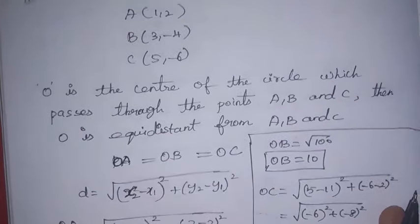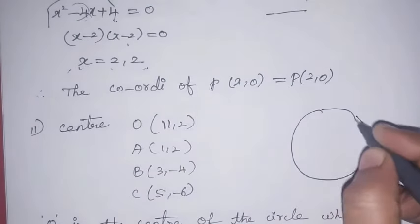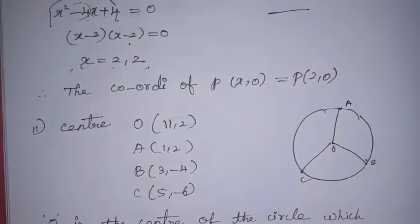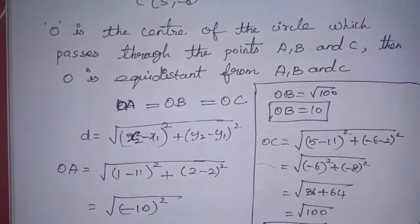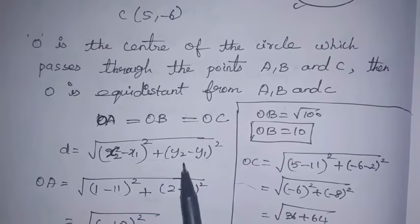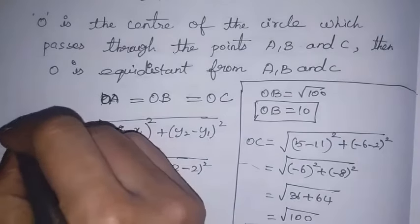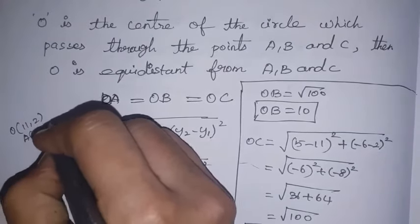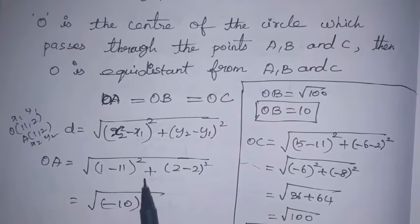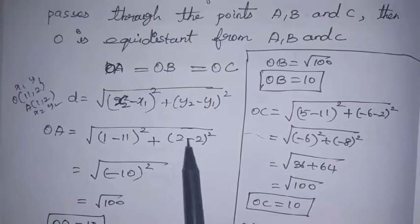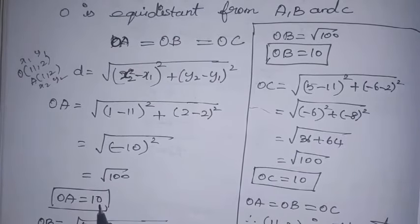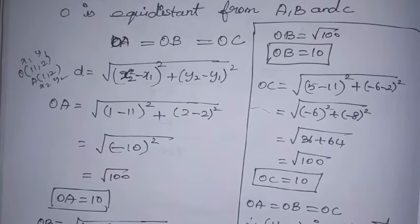First, find OA. O is (11, 2) as (x1, y1) and A is (1, 2) as (x2, y2). OA = √[(1 − 11)² + (2 − 2)²] = √[(−10)² + 0²] = √100 = 10 units.